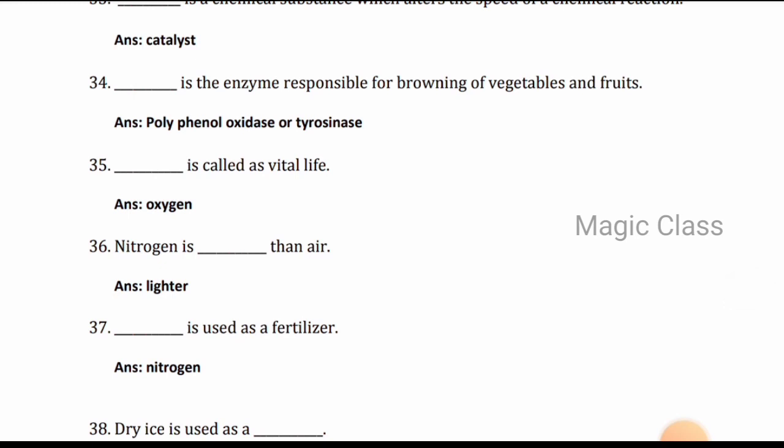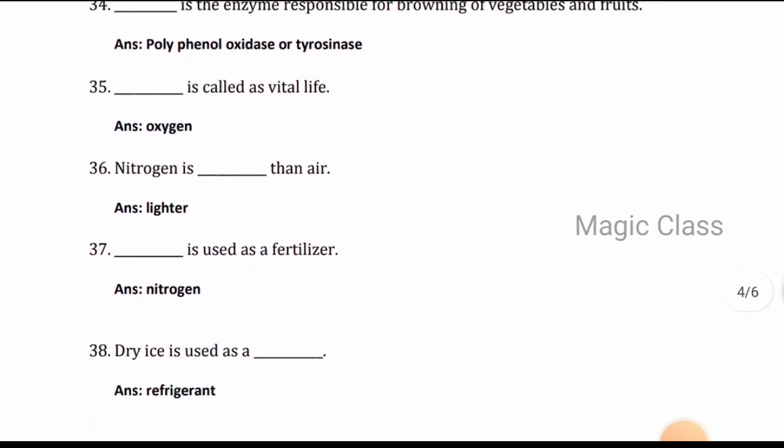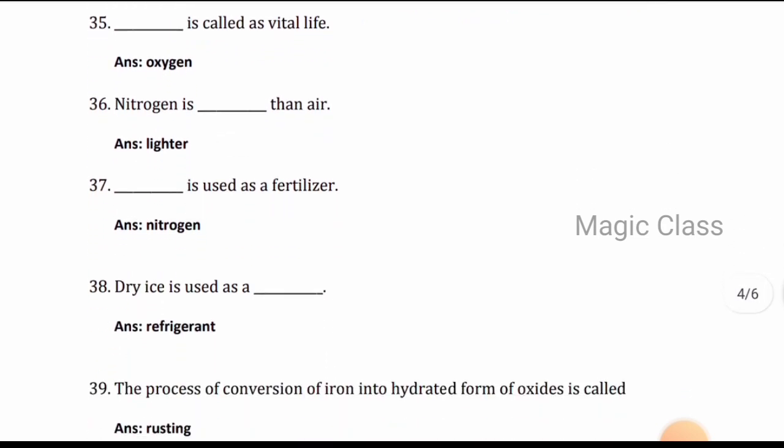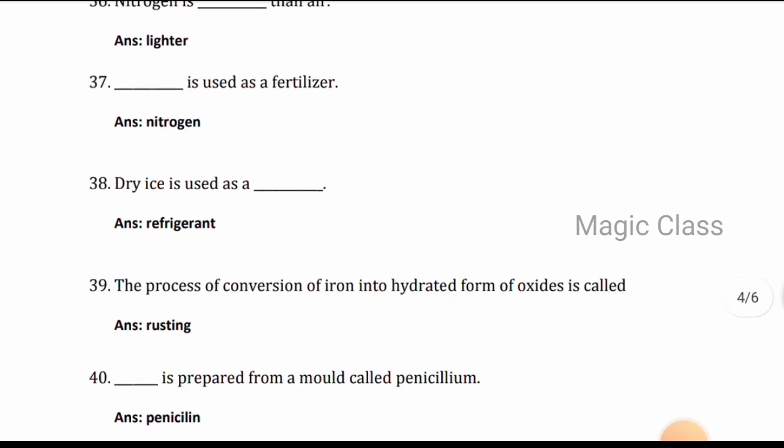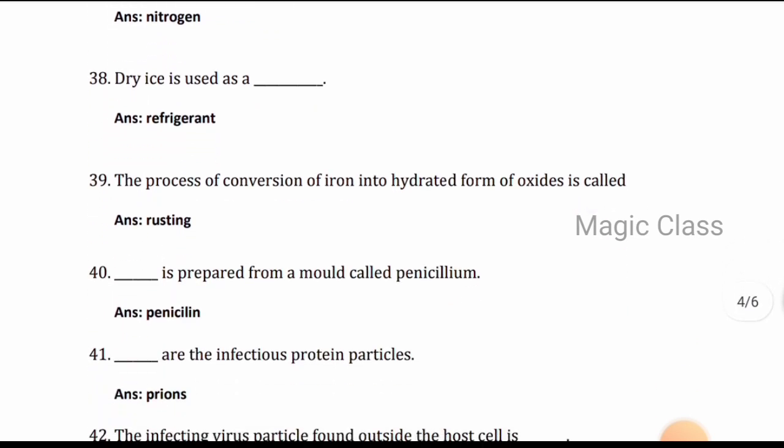Question 34: Polyphenol oxidase or tyrosinase is the enzyme responsible for browning of vegetables and fruits. Question 35: Oxygen is called vital life. Question 36: Nitrogen is lighter than air. Question 37: Nitrogen is used as a fertilizer.